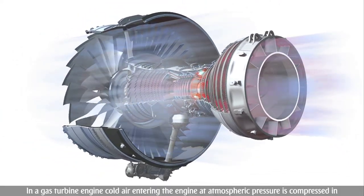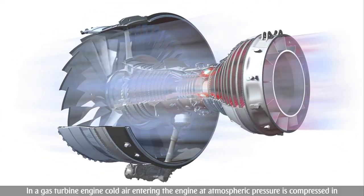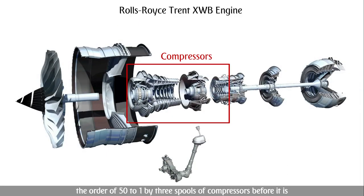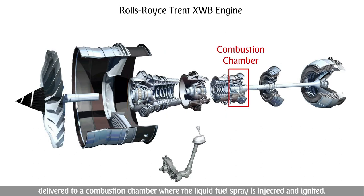In a gas turbine engine, cold air entering the engine at atmospheric pressure is compressed in the order of 50 to 1 by three spools of compressors before it is delivered to a combustion chamber, where the liquid fuel spray is injected and ignited.